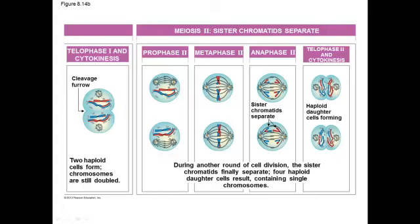Right here is where telophase 1 and cytokinesis happens. You've got a copy of chromosome one and chromosome two in each cell, and then even though it's still chromosome one, it's a slightly different version of it, and a slightly different version of chromosome two. Then cytokinesis occurs, making two distinct cells. This is where your two haploid cells form, because now there is only one version of each of the genes — only one chromosome one, not two.